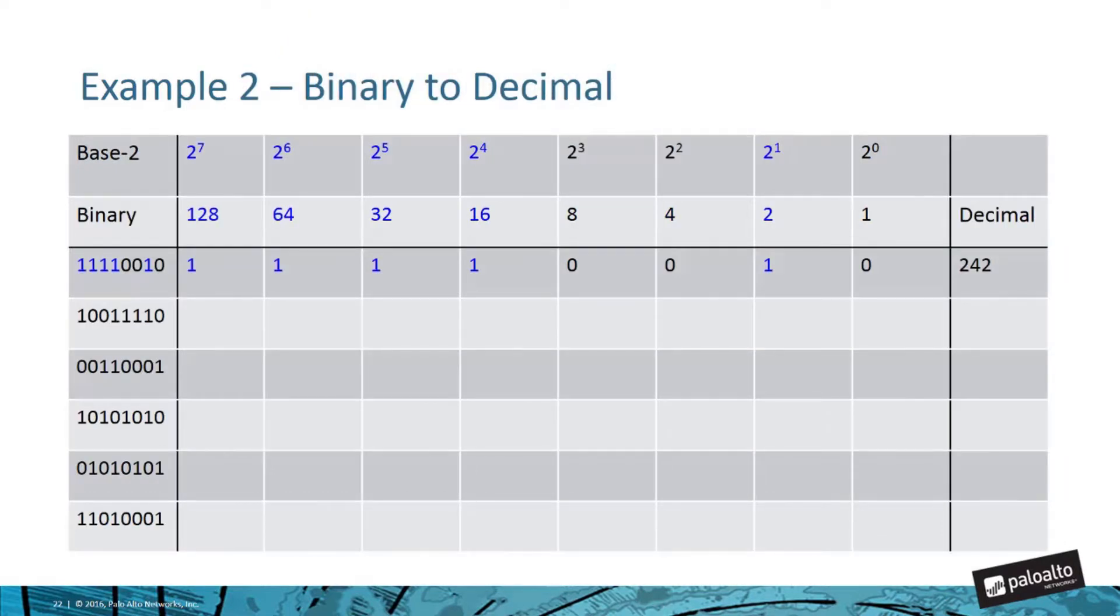Next thing we want to do is we want to try to calculate going the other direction. So you can see on the left-hand column at the top in blue there, you see 11110010. And so if you go and tick or mark each one of the placeholders that represent the bits being turned on, you have 128 plus 64 plus 32 plus 16. There are no 8's, no 4's, there's a 2, and no 1's. And if we calculate up each one of those and add them together, we will get 242. Again, take a moment and calculate the rest of the table for practice.